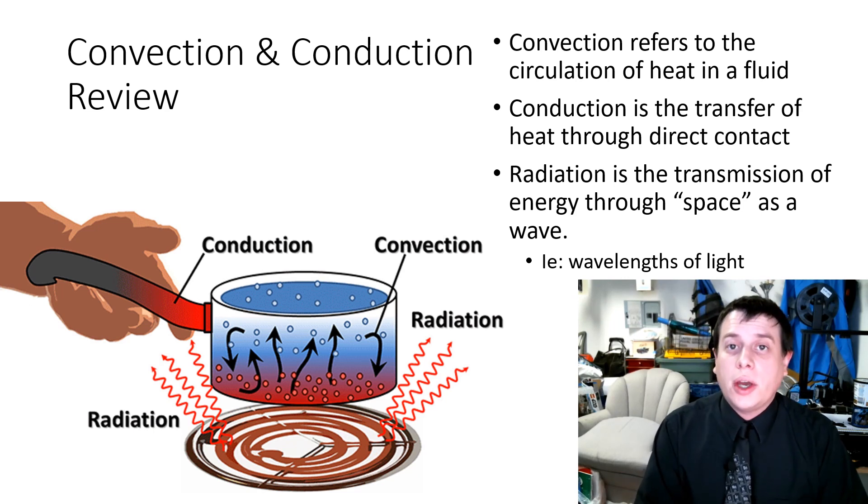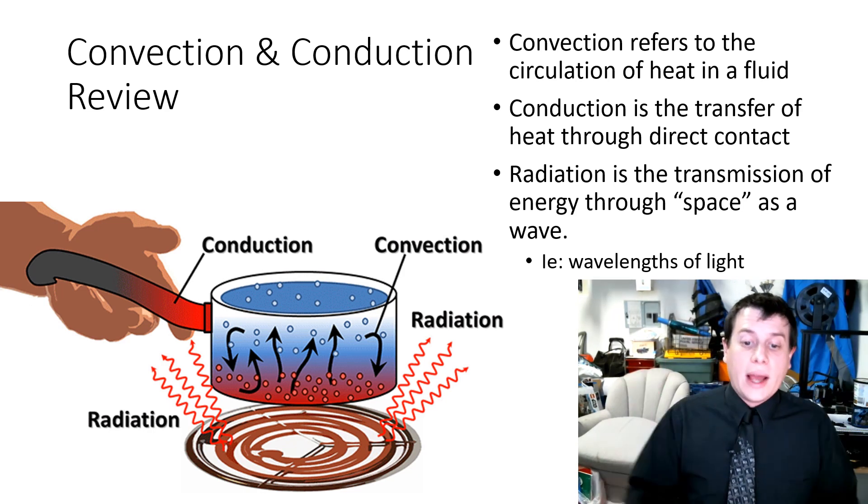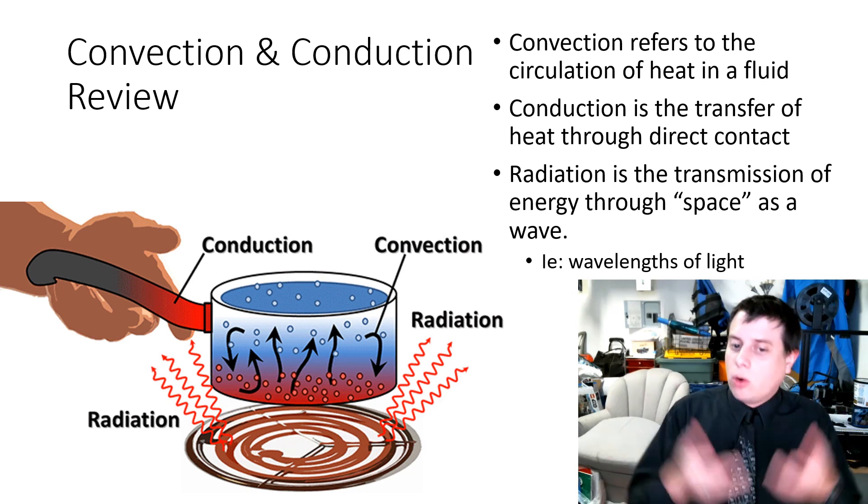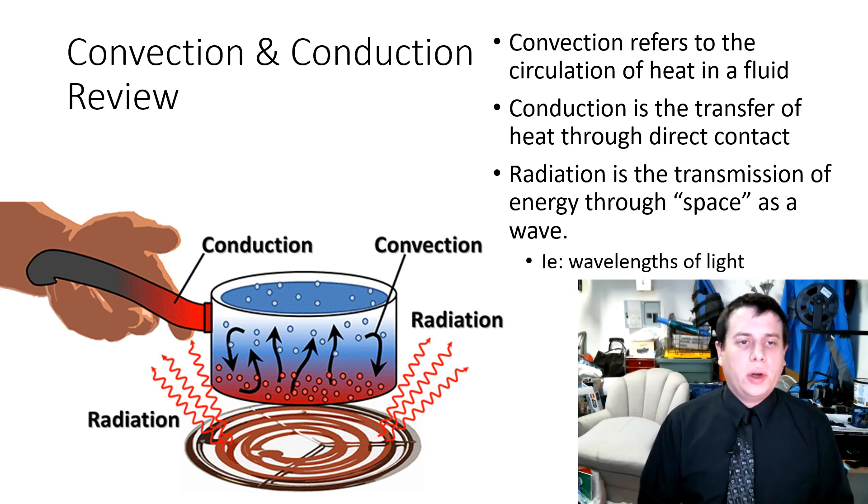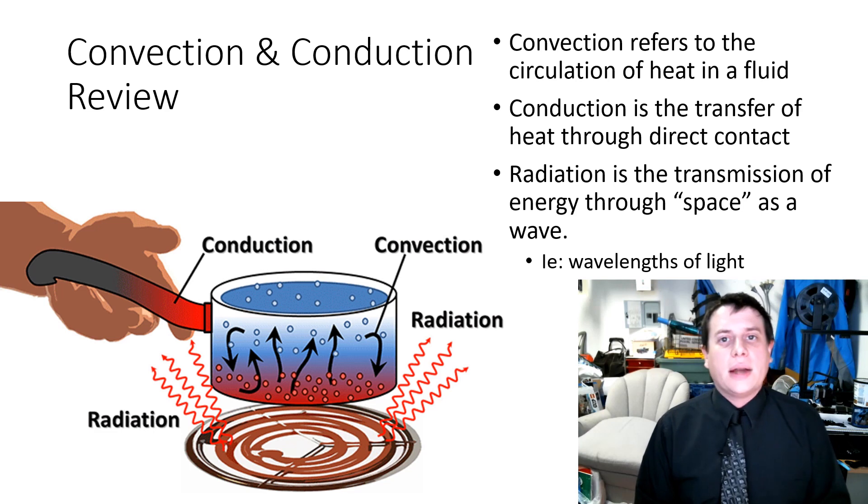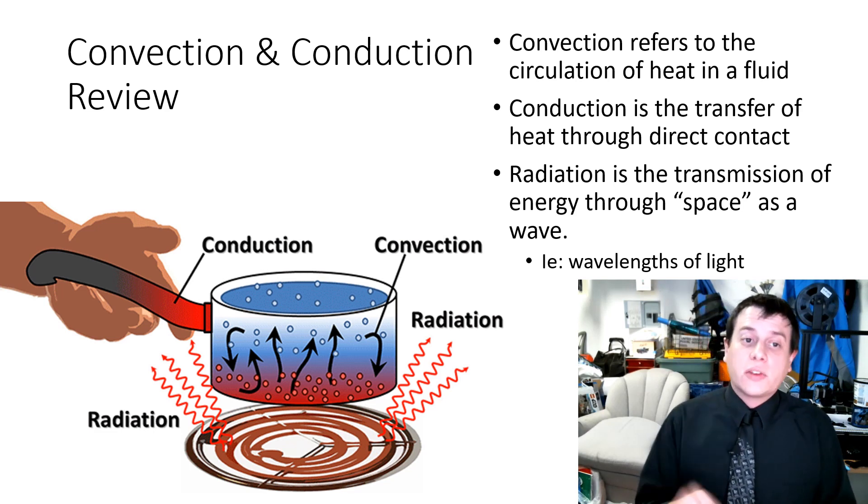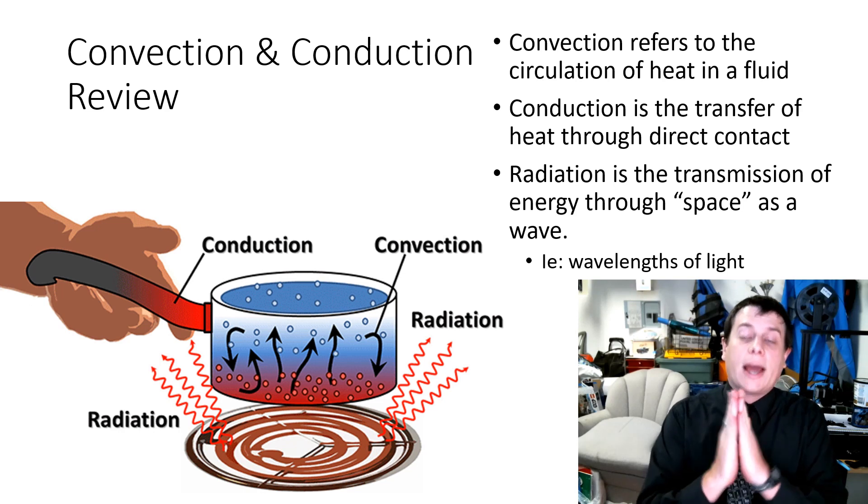Convection is the circulation of heat in a fluid. Now, there are other ways that heat is transferred. Conduction is the transfer of heat through direct contact. Convection would be the water inside a pot of boiling water. But conduction is what you would find if you were to grab the handle of that pot directly. That is transfer of energy through the direct contact of two materials.